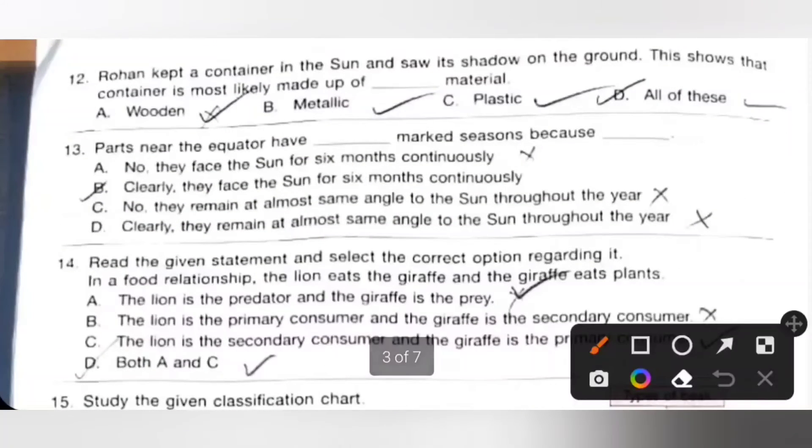Twelfth one: Rohan kept a container in the sun and saw its shadow on the ground. This shows that the container is most likely made up of dash material. Option A: Wooden, Option B: Metallic, Option C: Plastic. So the correct answer is option D, all of these.